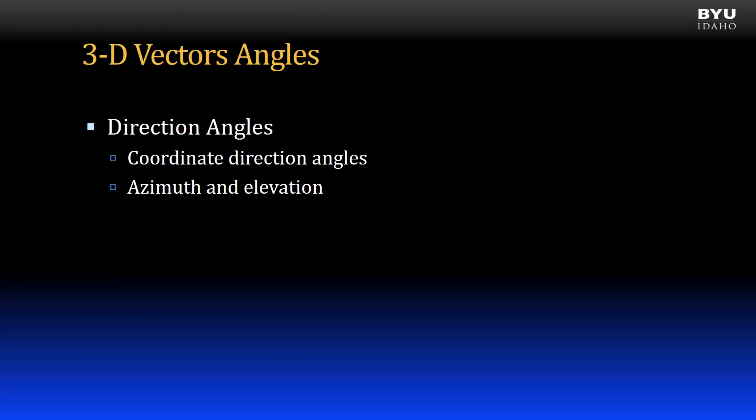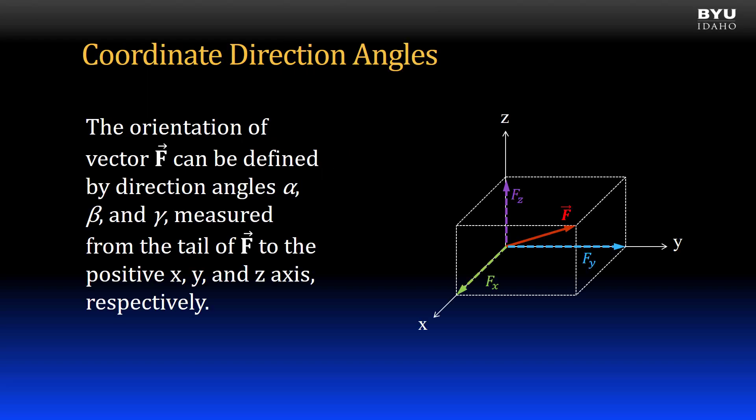Let's turn our focus to defining vector direction in three-dimensional space. There are two common methods for defining vector direction, coordinate direction angles and azimuth and elevation. First, coordinate direction angles. The orientation of vector f can be defined by direction angles alpha, beta, and gamma, measured from the tail of f to the positive x, y, and z axes, respectively.